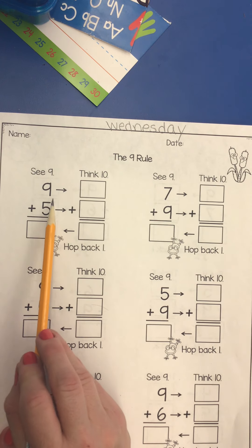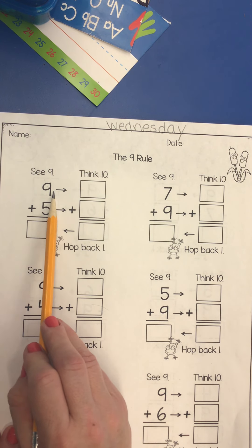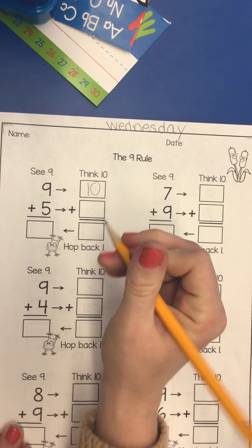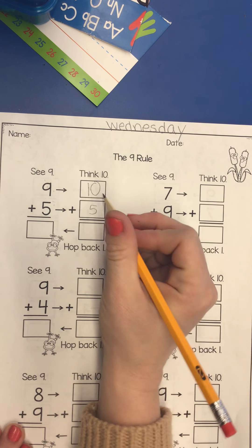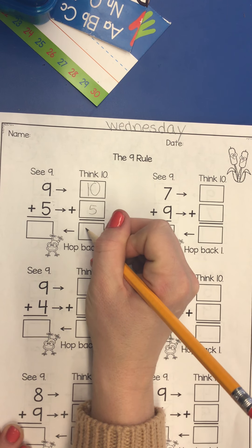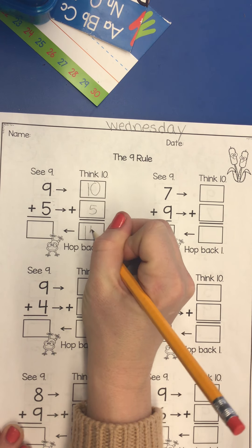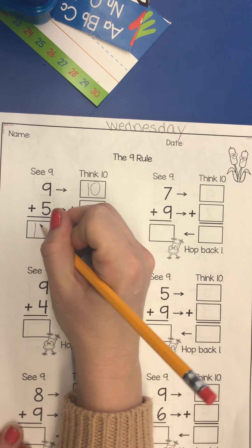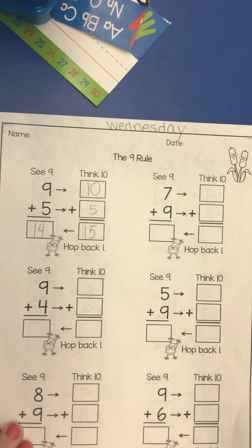And again, if we have 9 + 5, we see nine, but we're going to think 10. Bring your five over. 10 + 5 is 15, but then hop back one, 14.